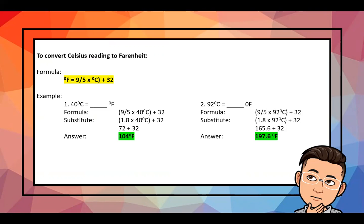Second example: convert 92°C to Fahrenheit. Using the formula (9/5) × 92 + 32: 9/5 = 1.8, then 1.8 × 92 = 165.6, and 165.6 + 32 gives a final answer of 197.6 degrees Fahrenheit. That is how to convert Celsius readings to Fahrenheit.